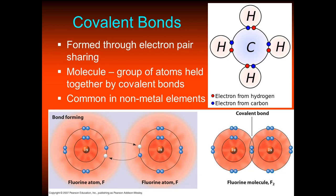Ions are created through ionic bonds; molecules are created through covalent bonds. Another example is fluorine bonding to itself — this is called diatomic. Each fluorine lacks one electron, so they bond and share that pair of electrons, satisfying the octet rule for both fluorine atoms.